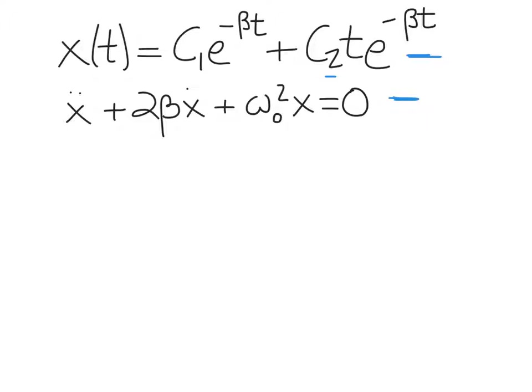Because we have a second-order differential equation, our final solution needs two linearly independent functions. These two functions are sufficiently different that when combined, they can give you any function needed — like two differently shaped Legos. The two solutions are c₁e^(−βt) and c₂te^(−βt), and you can build any general solution x(t) by combining them.